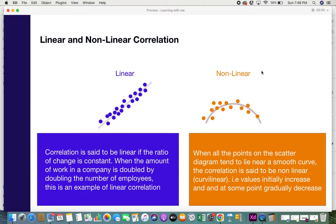Looking at nonlinear correlation, it's when all the points on the scatter diagram—now you can plot your correlations, usually scatter plots are used—so when you plot the points in a scatter diagram they tend to lie near a smooth curve.